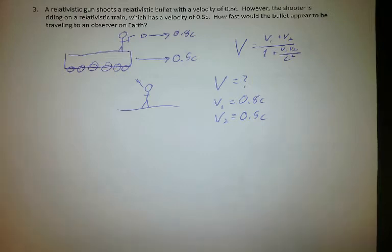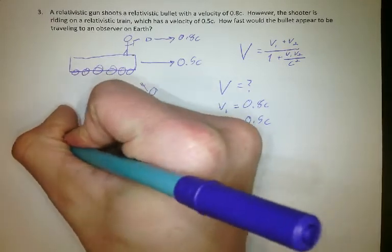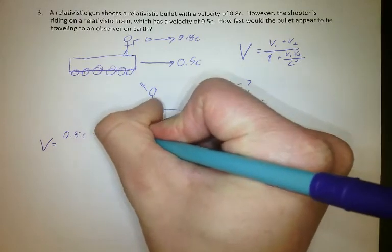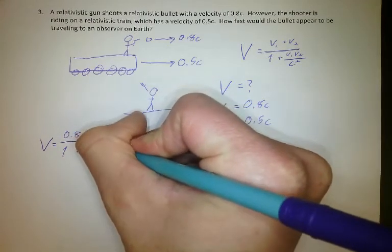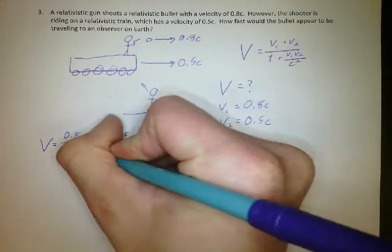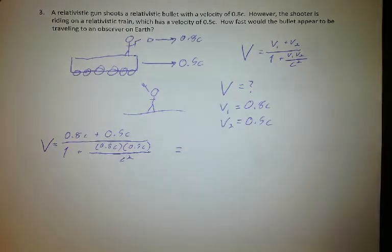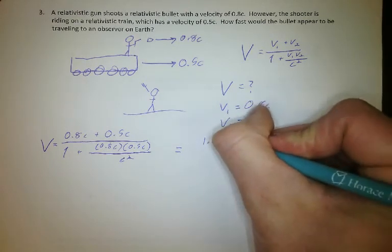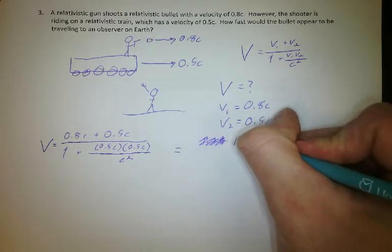Plugging the numbers in, we get V equals V1, which is 0.8c, plus V2, which is 0.5c, over 1 plus 0.8c times 0.5c over c squared. The first thing to do is add 0.8c and 0.5c — that's 1.3c.